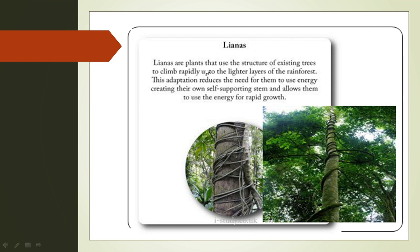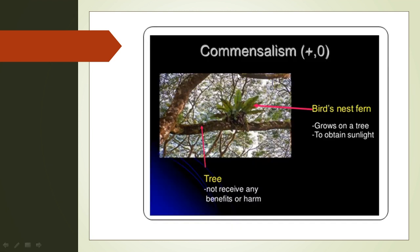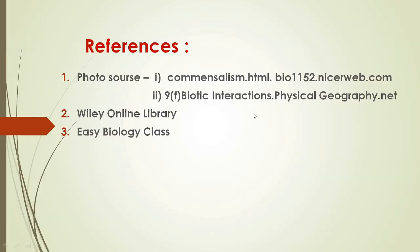Lianas are plants which use other plants' stems to move upward to get sunlight and prepare their own food. Another example is epiphytes, such as the bird's nest fern, which grows on a tree to obtain sunlight. The tree doesn't receive any benefits or harm from this bird's nest fern plant.